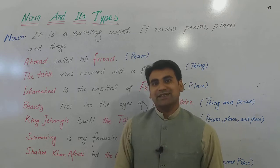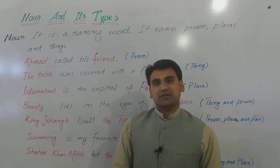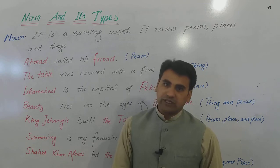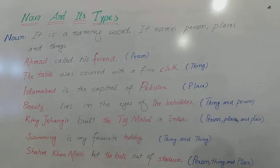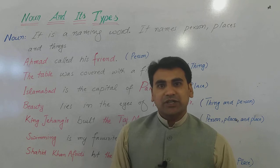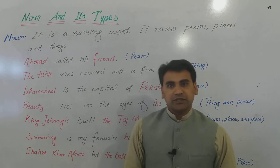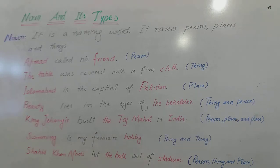'King Jahangir built the Taj Mahal in India.' In this sentence we have King Jahangir — a person — the Taj Mahal, one of the seven wonders of the world — a place — and India — a state, a place. So in this sentence we have two places and one person.